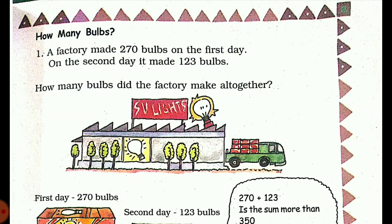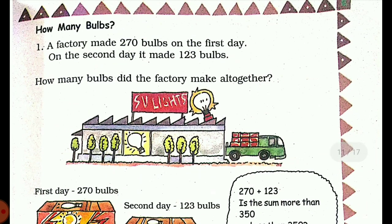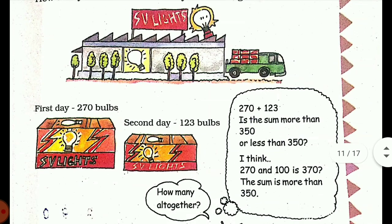Let's start. How many bulbs? A factory made 270 bulbs on the first day. On the second day it made 123 bulbs. How many bulbs did the factory make altogether? They have given bulbs made on first day and bulbs made on second day. So altogether, if you come across the word altogether, you have to just add.